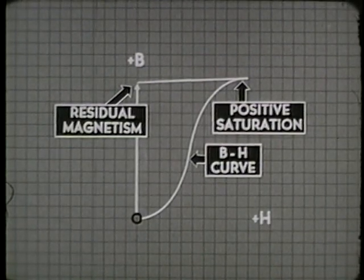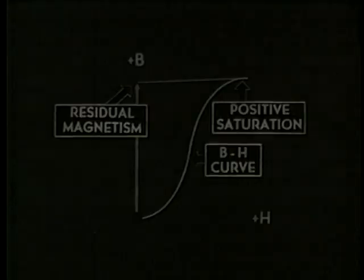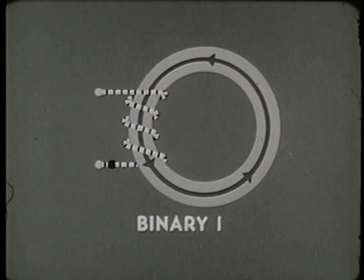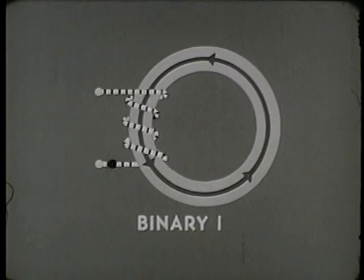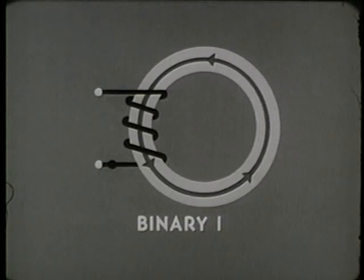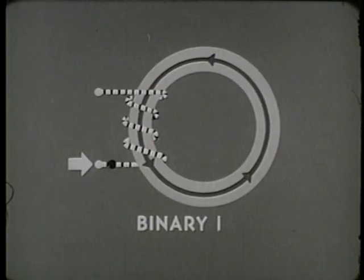When non-dot current sets the core to the binary one state, the residual property keeps it that way indefinitely. Suppose there is a second pulse of non-dot current — it will have no practical effect on the core because the core is already saturated with positive magnetism. But if we send current through the other way, into the dot side of the winding, then of course the core's state will change.